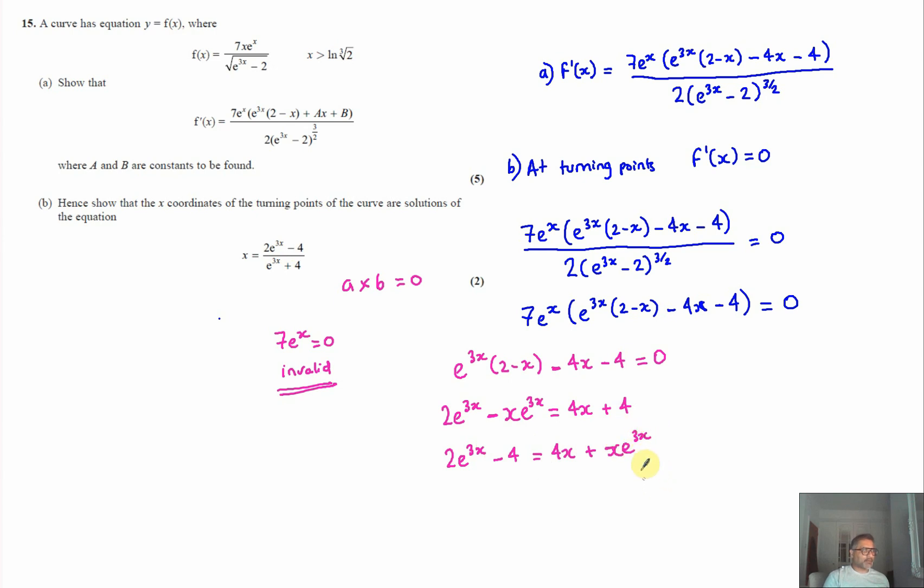e to the three x. And if I factorize the x out, that leaves me with four plus, I'm going to write it as e to the three x plus four. I'll just switch those round just to make it equal because you can see it's plus four there. So if two e to the three x minus four equals that, and therefore x will be that divided by that. So two e to the three x minus four divided by e to the three x plus four. QED, that was what is trying to be proved.